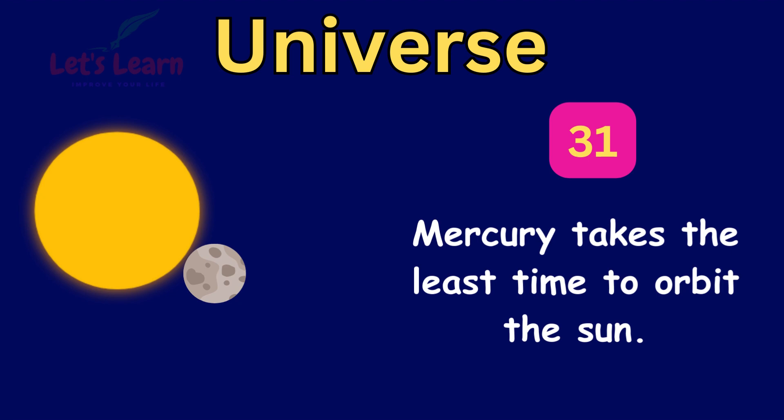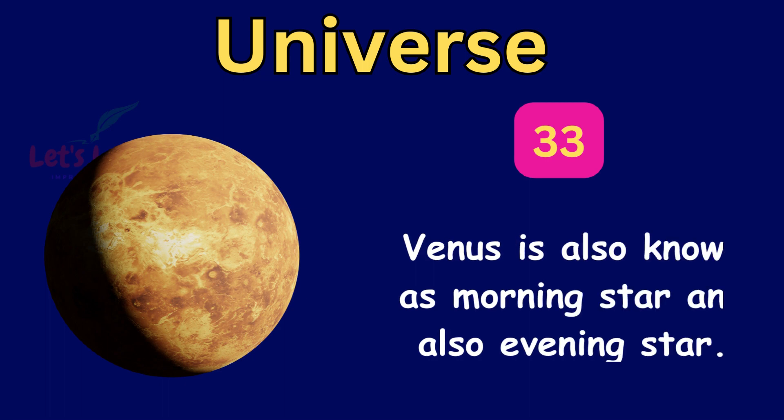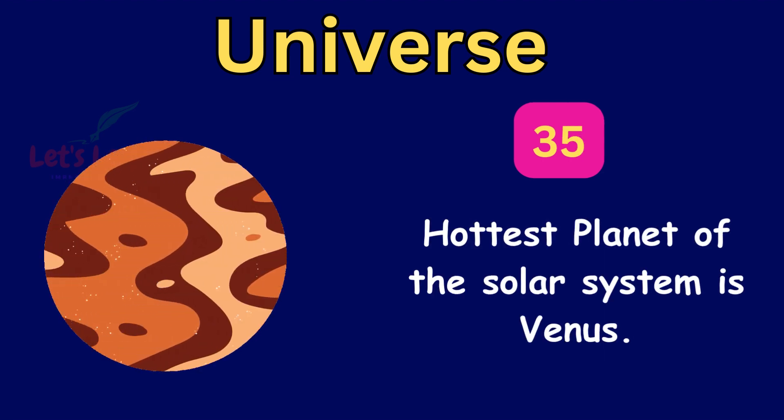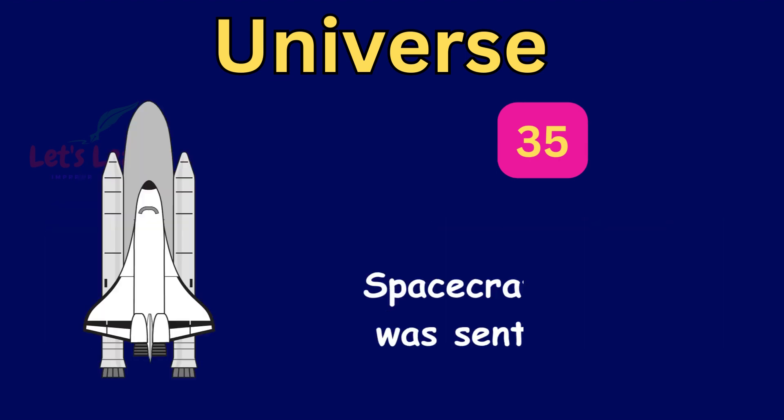Mercury takes the least time to orbit the Sun. The two planets which have no satellites are Mercury and Venus. Venus is also known as morning star and also evening star. Venus is called the twin sister of Earth. Hottest planet of the solar system is Venus. Spacecraft Magellan was sent to Venus.